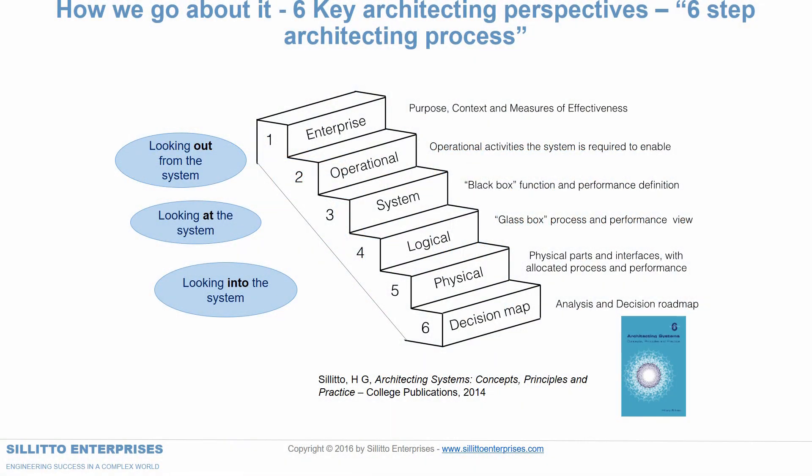This is a slide courtesy of Hilary Solito, where this is his six-step process for architecting. Notice that he talks about black box functionality, which could be purely solution-neutral, the glass box or white box, which is your logical level, and then you have obviously the physical pieces that would realize the logical. There is a lot of goodness in Solito's approach, and again, it's a recommended read and fairly inexpensive.